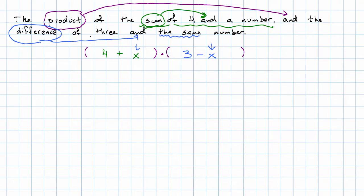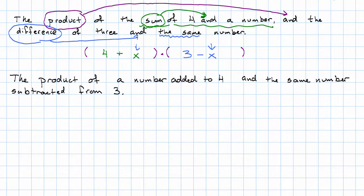A more natural way to describe this expression would be the product of a number added to four and the same number subtracted from three. So it would be more natural to phrase this so that there's only one use of the word and. That makes for a phrasing that's much, much easier to read. Okay. Let's see one more example.